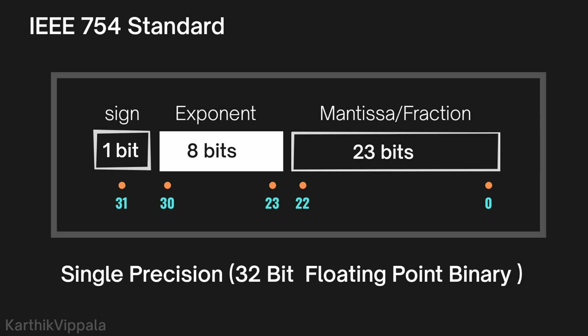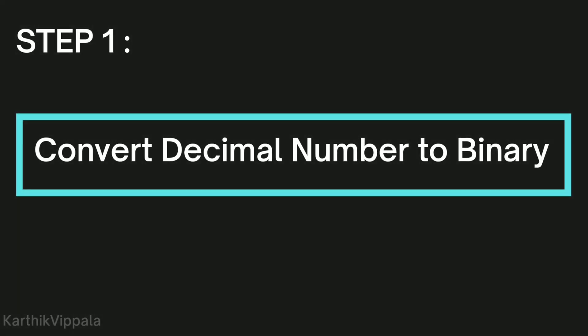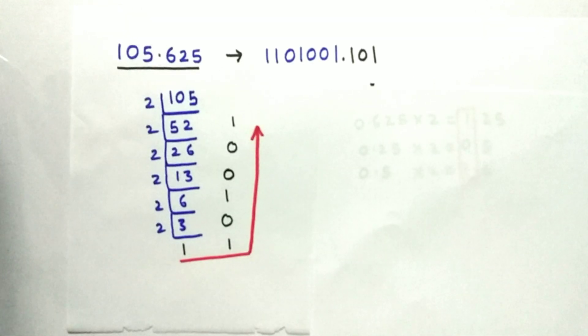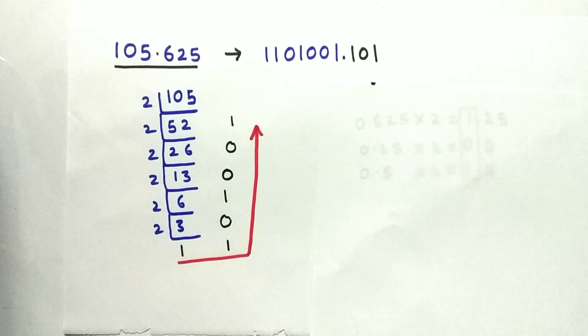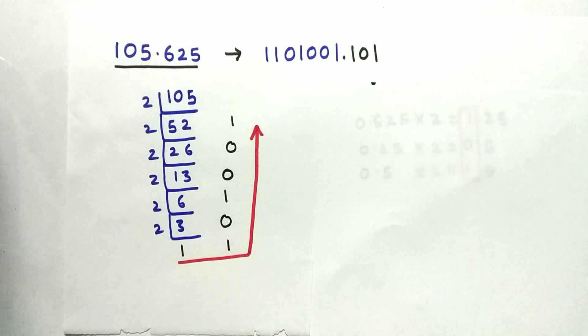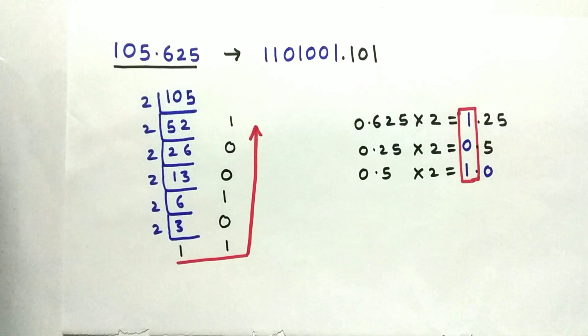To convert a real number into 754 standard we have four steps. The first step is to convert the decimal number into binary form. We need to convert the real number 105.625 into a binary value. To do that, you divide by 2 and get the remainder values from bottom to top. After the decimal point, multiply by 2 and take the values from top to bottom. The binary value of 105.625 is as shown.